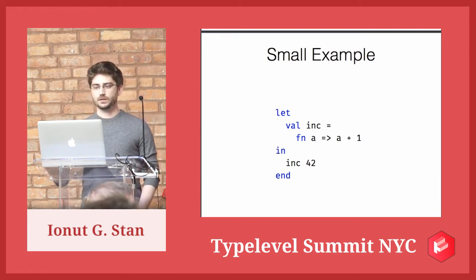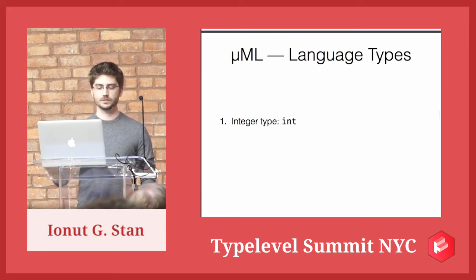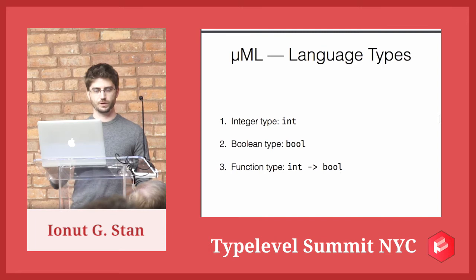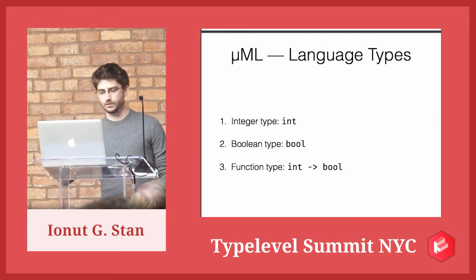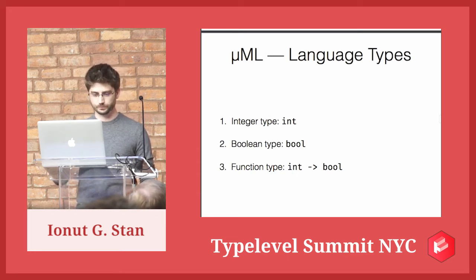Next step: what are the types supported by the language? We support integers, booleans, and functions. We have function type — for example, from int to boolean — which is just separated by a simple arrow. And we also have a generic type, so to say.